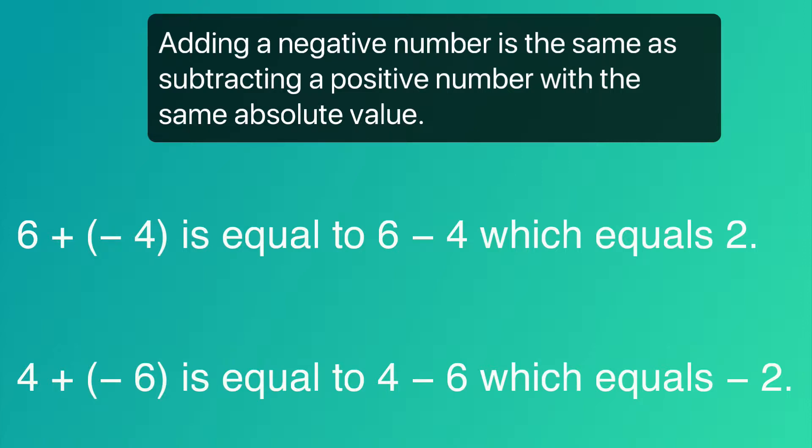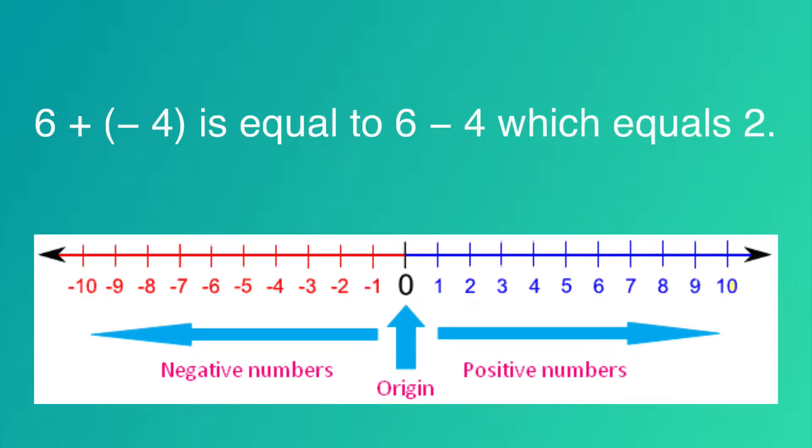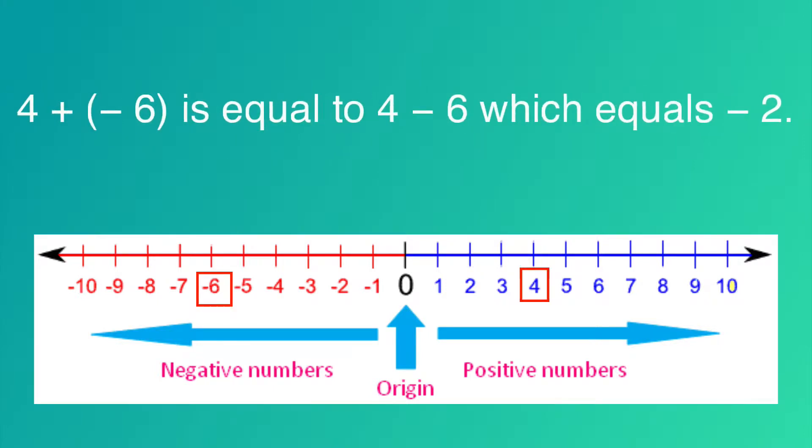Also, 4 plus negative 6 is equal to 4 minus 6, which equals negative 2. For problems like these, it may be helpful to use a number line to help visualize. Here is positive 6 and negative 4. By adding 6 to negative 4, you can see the box slide all the way to number 2. Same thing here with 4 plus negative 6. Subtract 6 numbers from 4 and you get negative 2.